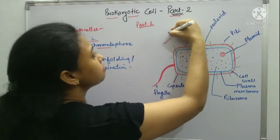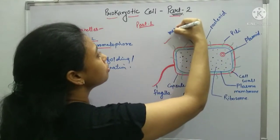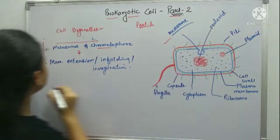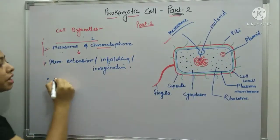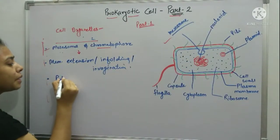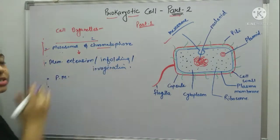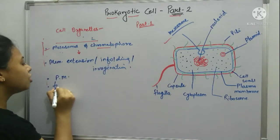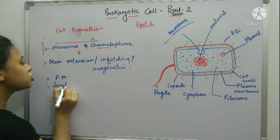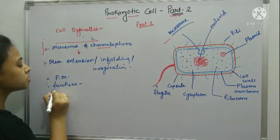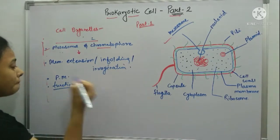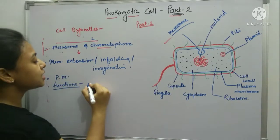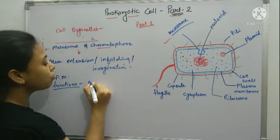So you can say mesosomes are made from the plasma membrane. Now what is the role of mesosomes? Let us have a look at the functions of mesosomes. The main important function is that it acts like a mitochondria.